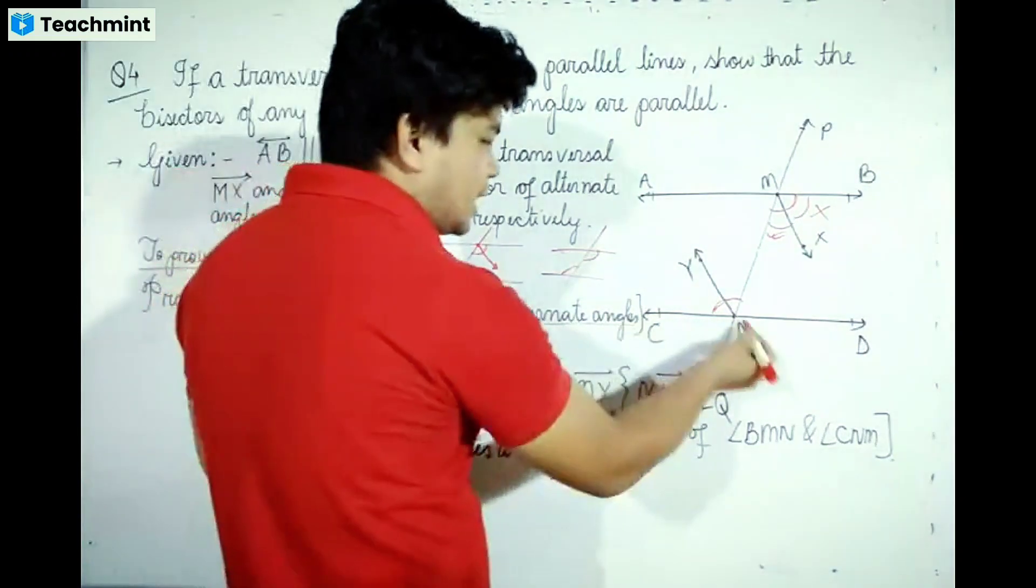Therefore, angle XMN equals half of angle BMN, which equals half of angle CNM, which equals angle YNM. So angle XMN equals angle YNM.